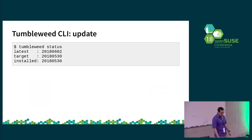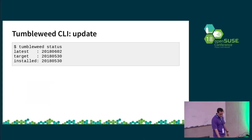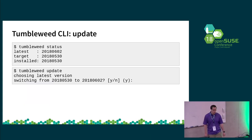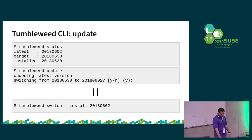Let's look at a typical scenario of updating. Since the actual repositories are pointing to a fixed version of Tumbleweed, just running a normal refresh and dup won't work — you need to actually change which snapshot you're pointing at. The command line is designed similar to Git, where you have an overview status which tells you the latest snapshot available on the remote end, the one you're currently targeting, and the one that's installed. If you run update, you can see we were running the 5.30 snapshot and the latest one is 6.02. Update automatically picks the latest one, which is equivalent to running switch with install.